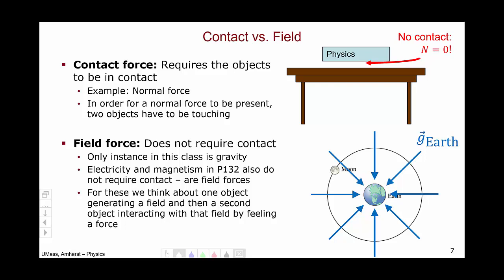And then a second object, say the Moon, interacts with that gravitational field by feeling a force. In the case of gravity, the force felt is the mass of the object, in this case the Moon, multiplied by the gravitational field at that location.